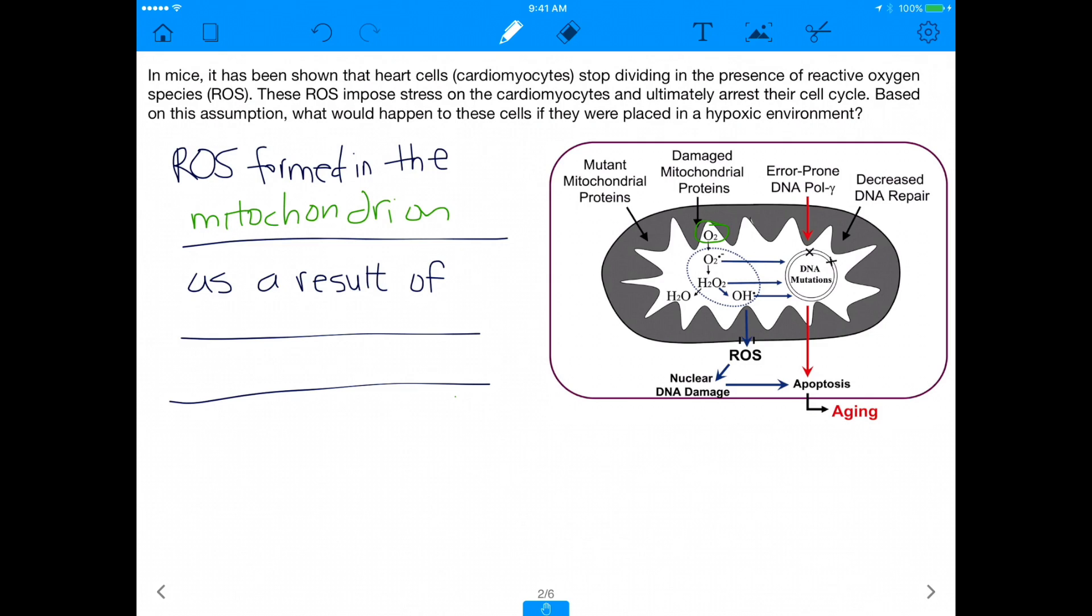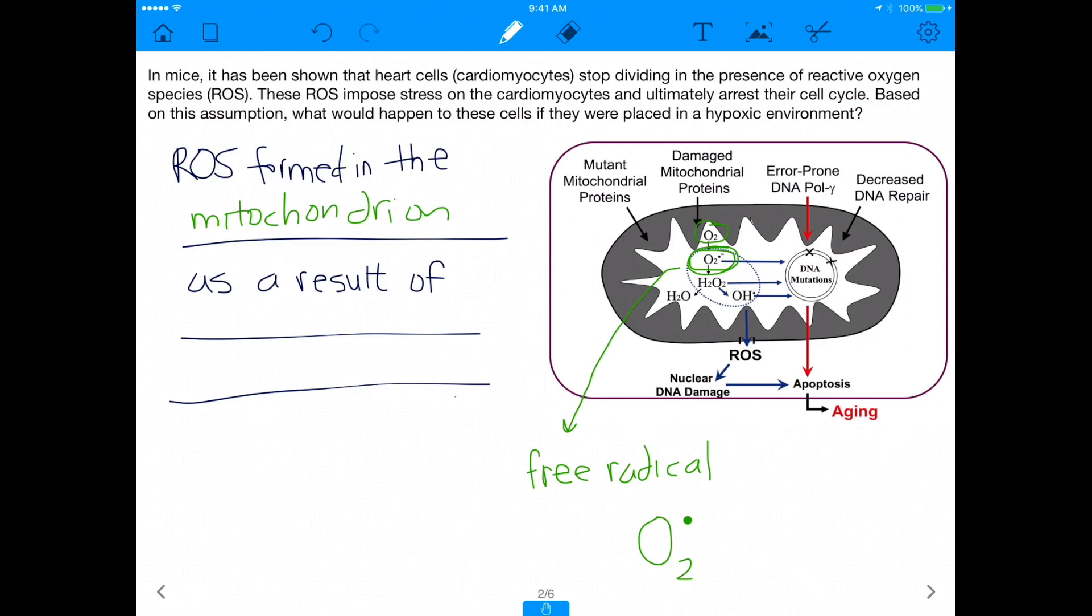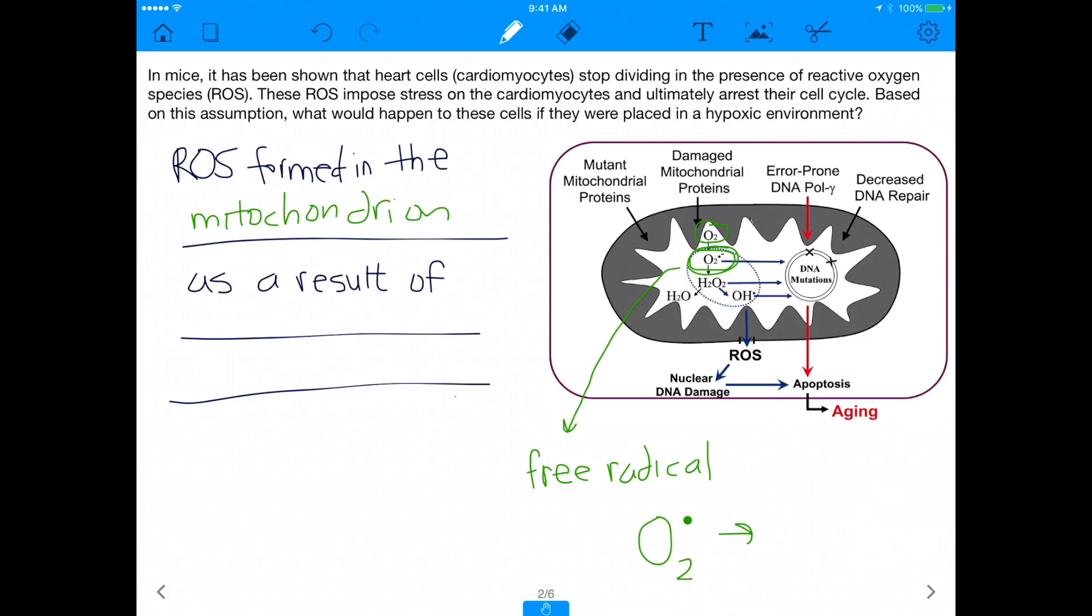Because what happens is this original oxygen goes into the mitochondria. And sometimes what can happen is it can turn into a lone pair. It can have an unpaired electron. And this is known as a free radical. Free radicals can be very, very, very detrimental to a cell because that extra unpaired electron, notice how this is O2, right? And if you have an unpaired electron on O2 just by itself, that unpaired electron is very reactive.